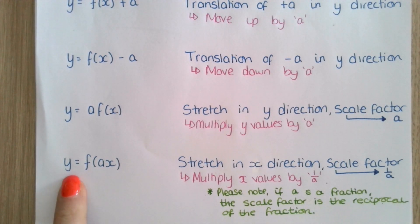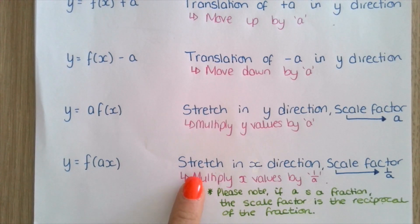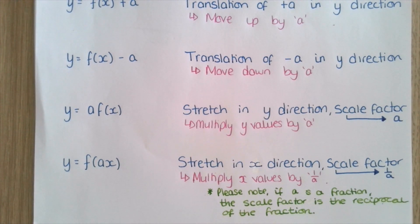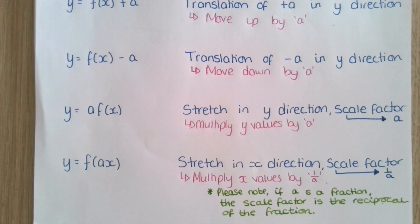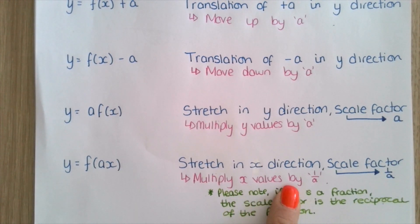And finally, we've got y equals f of ax, where the a this time is inside the brackets. This will be a stretch in the x direction by scale factor of 1 over a. So you need to multiply your x values given on the graph y equals f of x by 1 over a. If you've got a fraction, the scale factor will be the reciprocal of the fraction. Therefore, if you were given y equals f of a half x, you would then multiply your x values by 2.